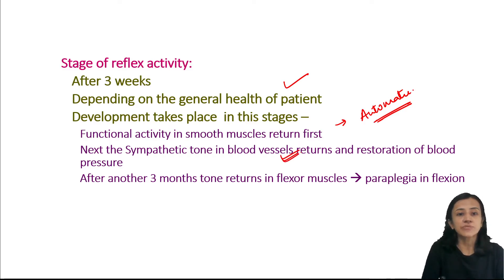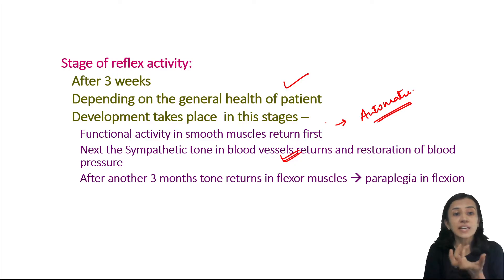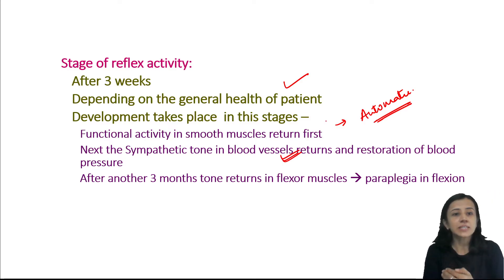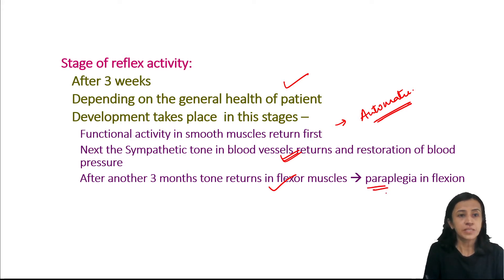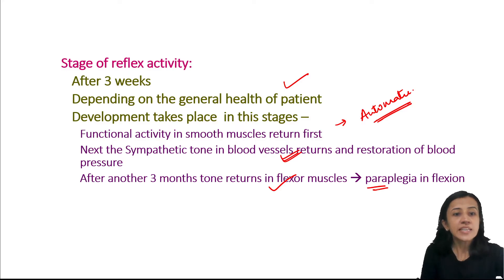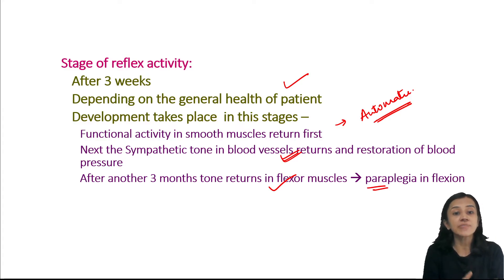Second, sympathetic tone of blood vessels returns, resulting in fluctuation in blood pressure, as the connector cells of the spinal cord begin to act independently of the vasomotor center. Next, sweat secretion starts, skin becomes moist, and bed sores begin healing. Then, tone of the flexor muscles returns first — so there is paraplegia in flexion. Muscle wasting is absent because voluntary movements are absent but muscles remain in constant reflex activity. There is denervated hypersensitivity to mediators released by remaining spinal excitatory endings, and collaterals grow from excitatory inputs, resulting in reflex excitability.